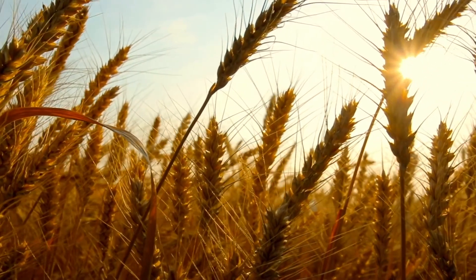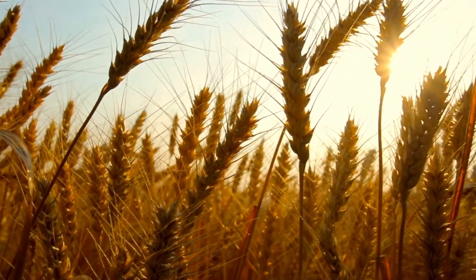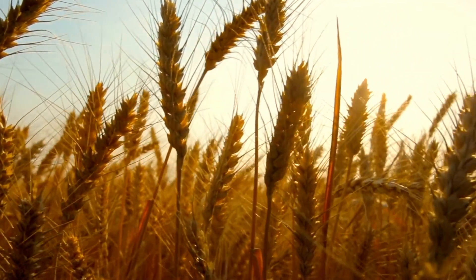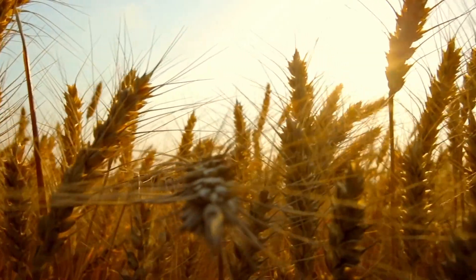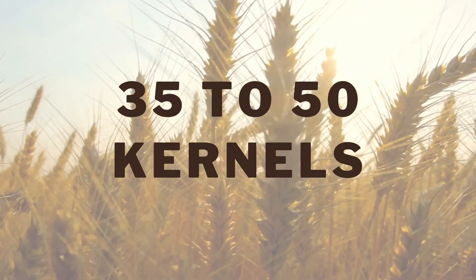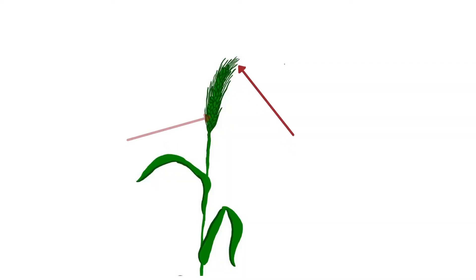The head of the wheat is a part of the wheat that contains the kernels. It is also known as an ear or spike. The head will form at the top of the plant and usually contains 35 to 50 kernels. There are two main parts of the head: the awn and the kernel. Let's discover more about these parts.